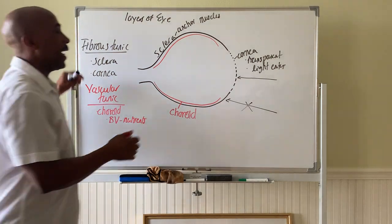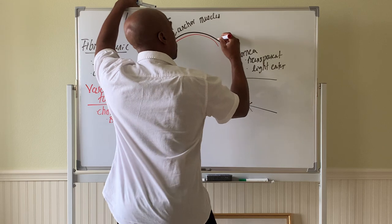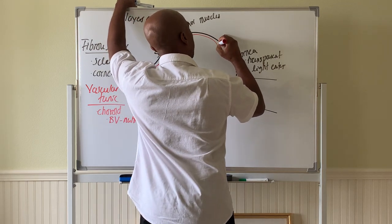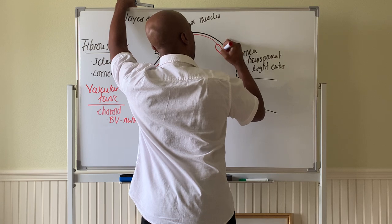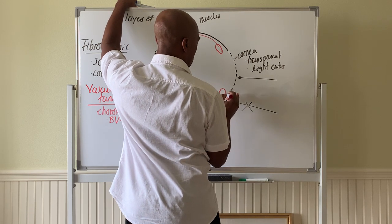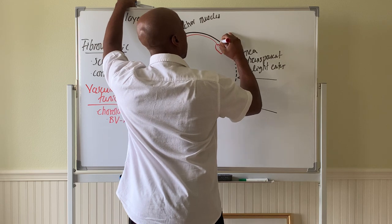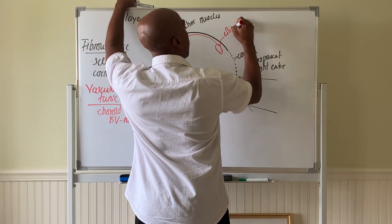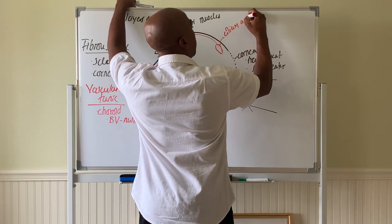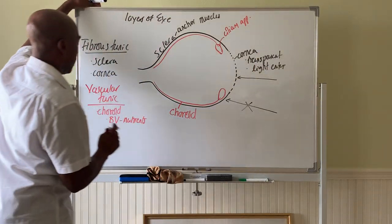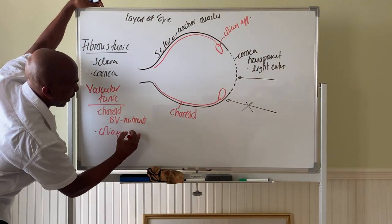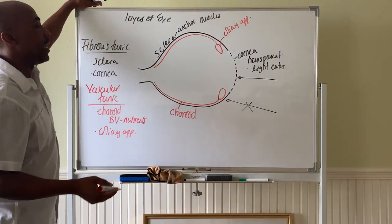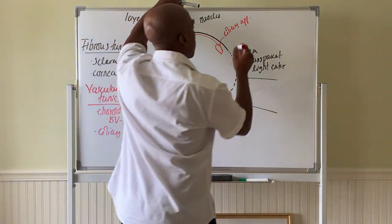And towards the front, the choroid turns into what we call a ciliary apparatus. Your ciliary apparatus. It's a choroid. You have ciliary apparatus. And that apparatus has two parts to it.